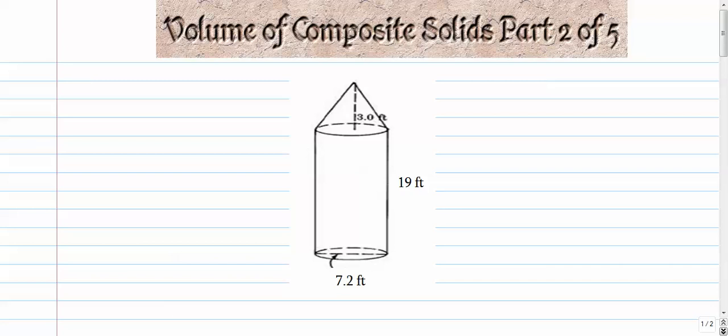All right, part two of our composite solid volume series. When we say composite solids, what we're talking about are solids that are combined or put together, in this case put on top of one another, to form a very complex solid.